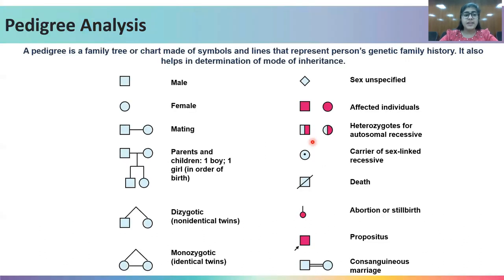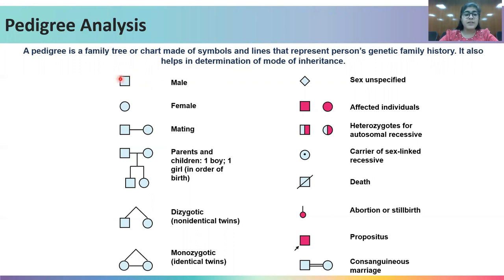Just to revise: a pedigree is a family tree or chart made of symbols and lines that represent a person's genetic family history. It also helps in determination of the mode of inheritance. For example, a square represents male, a circle represents female, and so on.